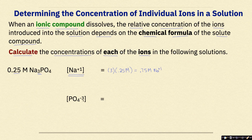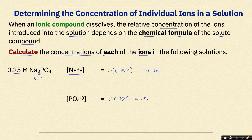Now let's look at the phosphate ion. The ratio of Na to phosphate is 3 to 1, so there is only 1 mole of phosphate ion. So 1 times the overall concentration of 0.25 molar gives us 0.25 molar for the concentration of the phosphate ion.